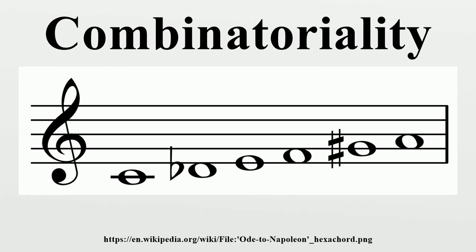Because the first three sets each satisfy all four criteria for just one transpositional value, set D satisfies them for two transpositional values, E for three values, and F for six transpositions. Babbitt designates these four groups as first-order, second-order, third-order, and sixth-order all-combinatorial hexachords, respectively.